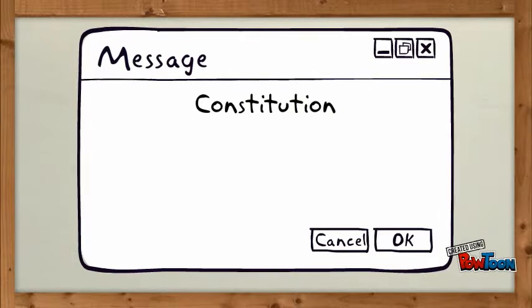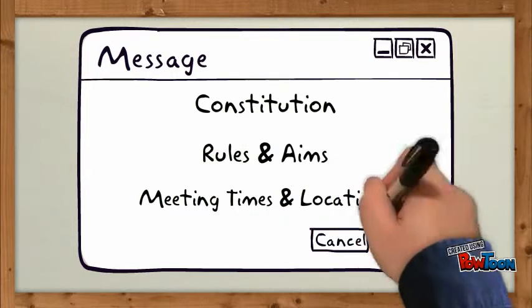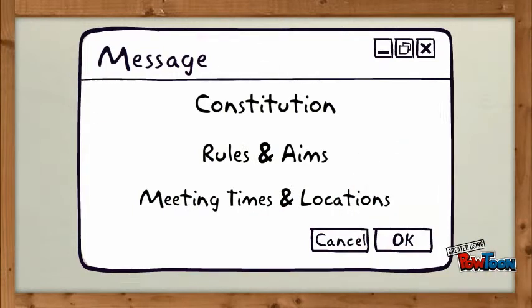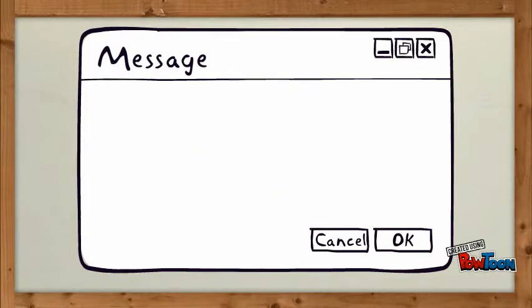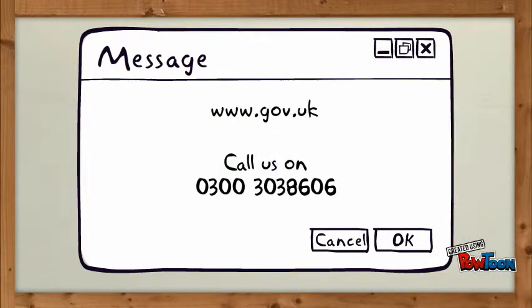Again, this just sets out the rules and aims that you want to achieve, and sometimes as well, how often meetings are going to take place and when they're going to take place. You can find some templates for these governing documents on gov.uk, or otherwise you can contact your local engagement officer from VAST.